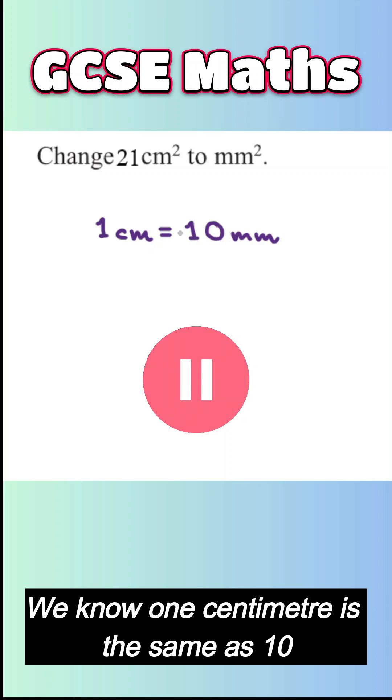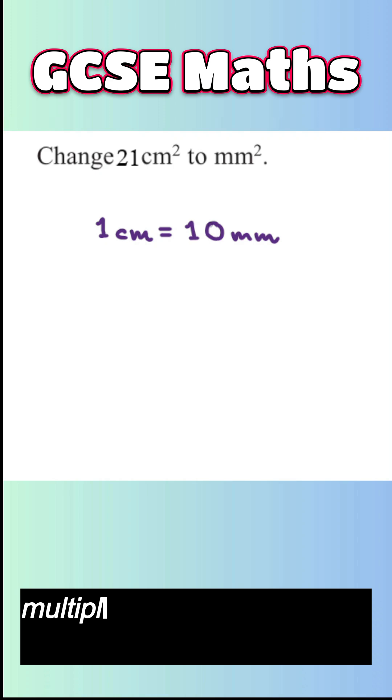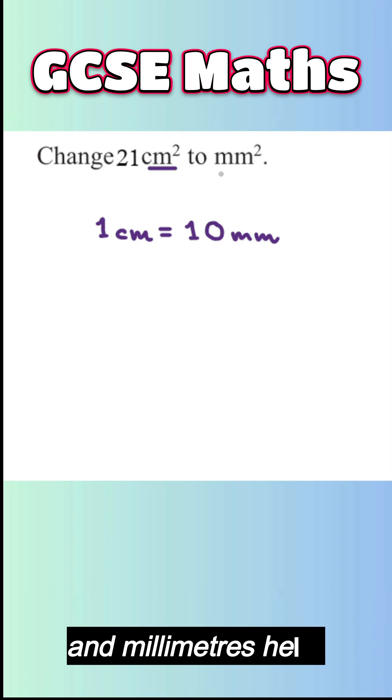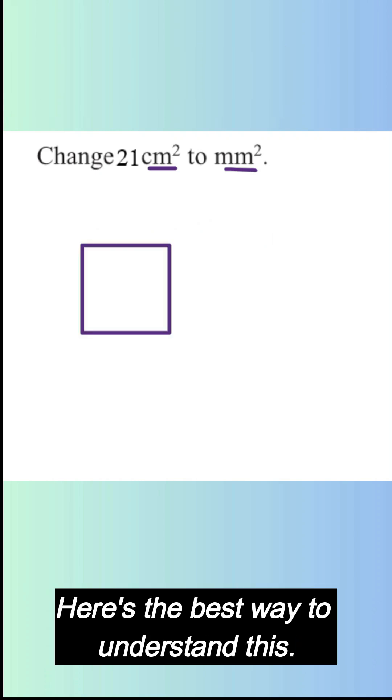Now we know one centimeter is the same as 10 millimeters. This is also the source of error in this situation because many students just multiply 21 by 10, thinking centimeter and millimeter, but what they forget is actually it's centimeter squared and millimeter squared. Here's the best way to understand this.